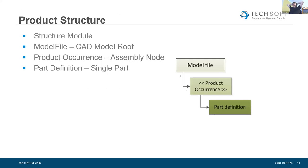When you read a file into HOOPS Exchange, we've got a PRC data model there. At the top level is the model file, and then below that are multiple product occurrences — a product occurrence represents an assembly node and is a basis for instancing as well. Below that you've got the actual part definitions. Typically when we talk about part definition, we're talking about a PRC data definition that usually corresponds to a single part you might think of physically.